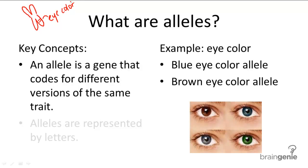you could have red hair or blonde hair. So this section of the gene will always code for eye color, but depending on the person, they might have the genes for blue eyes in that section, or another person would have the genes for brown eyes in that section.